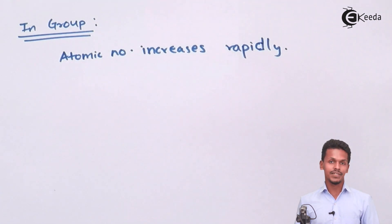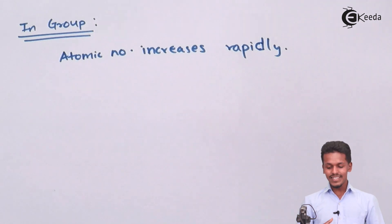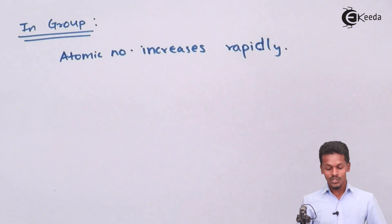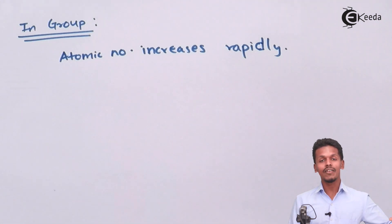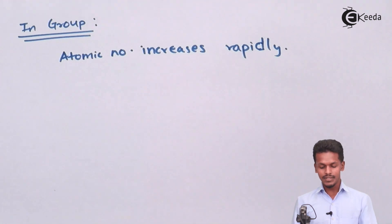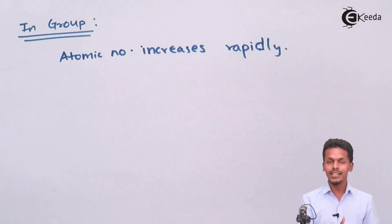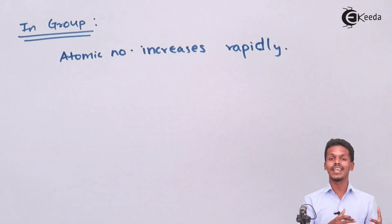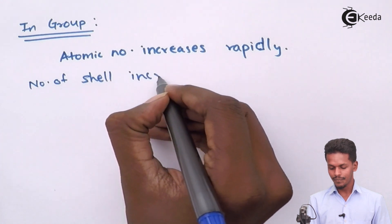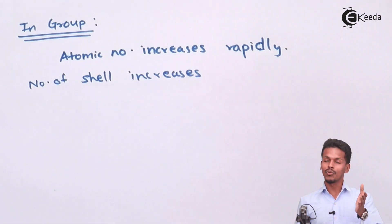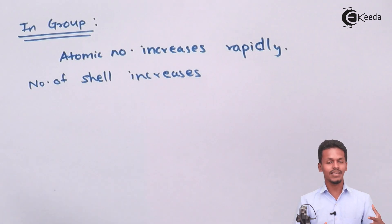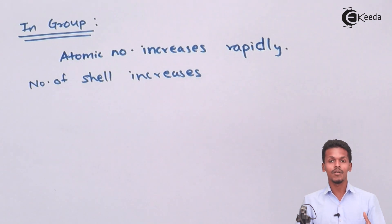As the atomic number increases rapidly, the number of shells also increases as we move down the group. In a period, the number of shells was almost the same, but in a group the atomic size increases because the number of shells increases. If the number of shells increases, obviously the number of electrons will also increase, resulting in the atomic size being larger, and there will be a rapid change rather than a gradual one.